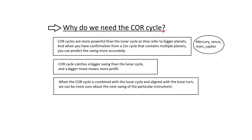Why do we need the COR cycle? COR cycles are more powerful than the LUNAR cycle as they refer to bigger planets — planets like Mercury, Venus, Mars, and Jupiter. When you have confirmation from a COR cycle that contains multiple planets, you can predict the swing more accurately. The COR cycle catches a bigger swing than the LUNAR cycle. A bigger move means more profit. When the COR cycle is combined with the LUNAR cycle and aligned with the LUNAR turn, we can be more sure about the next swing of the particular instrument.